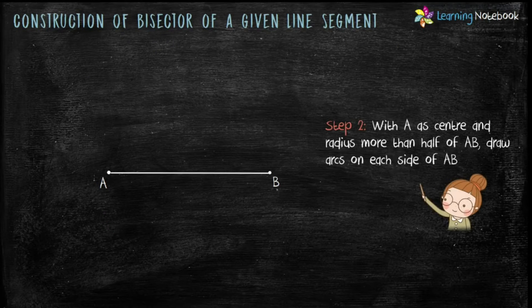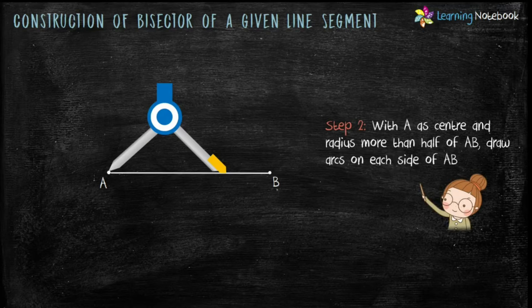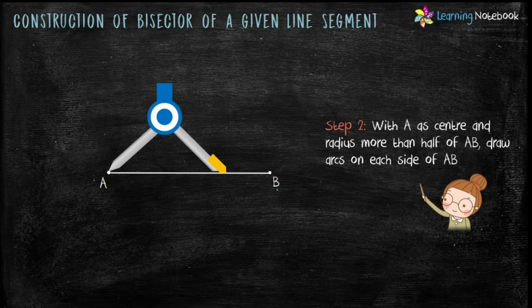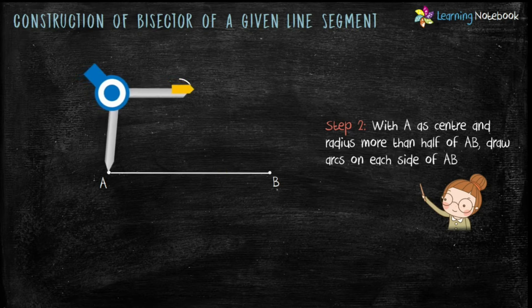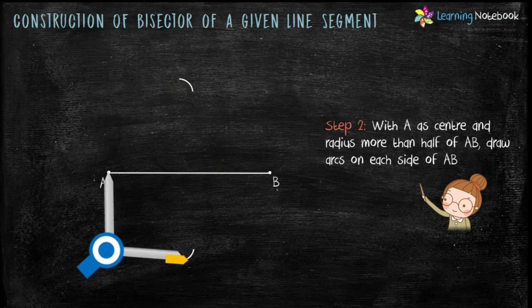Step 2 is with A as center and radius more than half of AB, draw arcs on each side of AB as shown here.